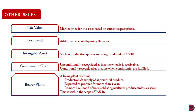Let's look at bearer plants. A bearer plant is used in the production or supply of agricultural produce and is expected to produce for more than a year. It is also remotely likely to be sold as agricultural produce unless sold as scrap goods. Bearer plants are outside the scope of IAS 41 but are considered under IAS 16, which is property, plant and equipment. Bearer plants differ from biological assets in that the bearer plant is purposely grown or kept to generate agricultural produce — for example, trees grown to be turned into lumber, or animals grown to be turned into meat to sell to the market.